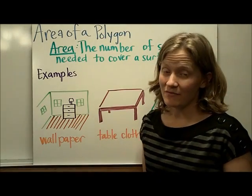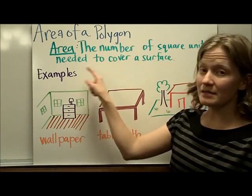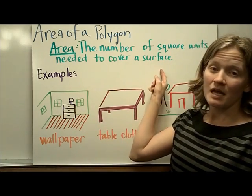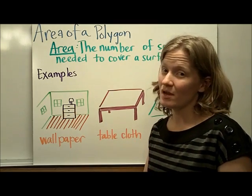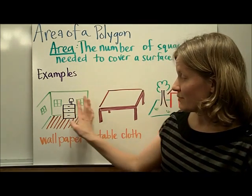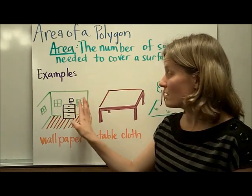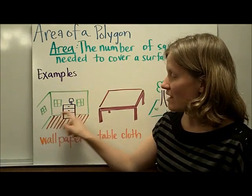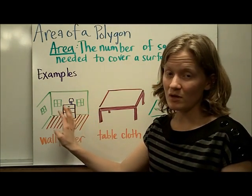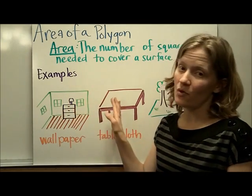Area of a Polygon. The definition of area is the number of square units needed to cover a surface. Let's talk about some examples in real life where you might want to find the area of a surface. For example, if you had some really hideous lime green paint in your bedroom and you wanted to cover it with wallpaper that you liked a lot better, you would want to find the area of your wall so that you would know how many square feet of wallpaper to buy to cover the wall.